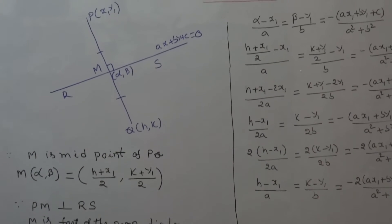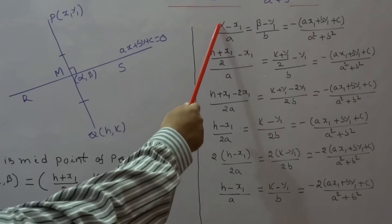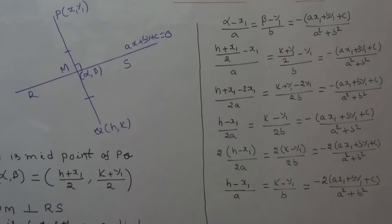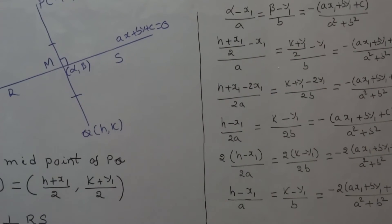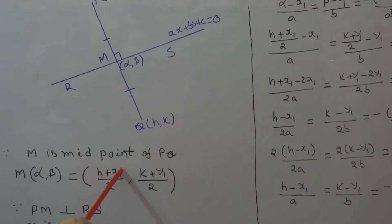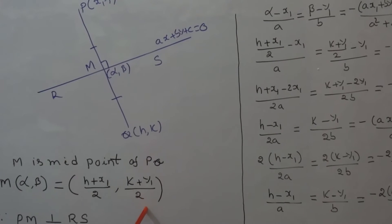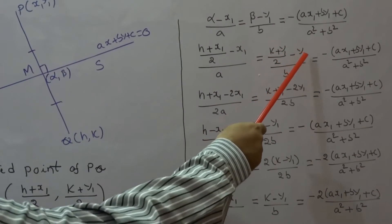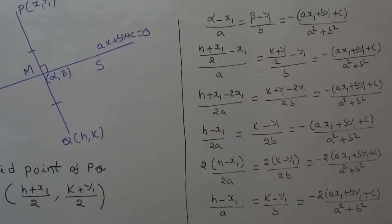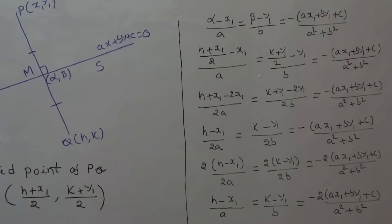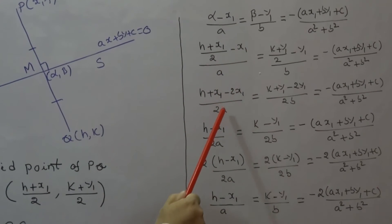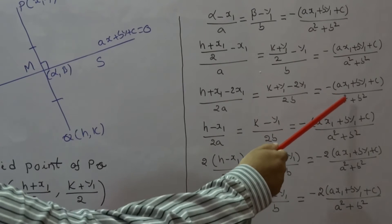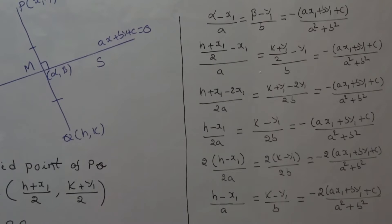Since PM is perpendicular to the line RS, M is the foot of the perpendicular drawn from point (x1, y1) on the line ax + by + c = 0. Using the foot of the perpendicular theorem, we get (α - x1)/a = (β - y1)/b = -(ax1 + by1 + c)/(a² + b²). Substituting α = (h + x1)/2 and β = (k + y1)/2.